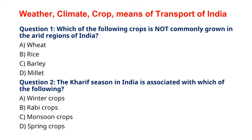Question 2: The Kharif season in India is associated with which of the following? A. Winter crops, B. Rabi crops, C. Monsoon crops, D. Spring crops. The correct answer to question 2 is option C, Monsoon crops. The Kharif season is the summer monsoon season when crops like rice, maize, and cotton are sown.